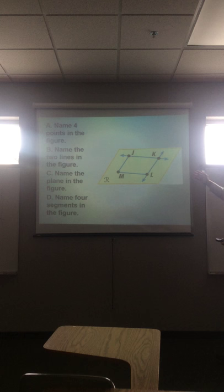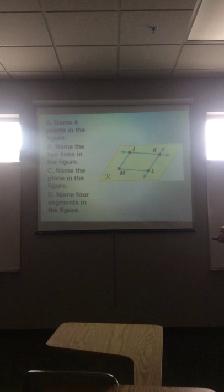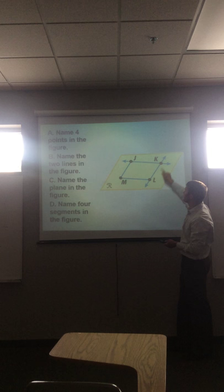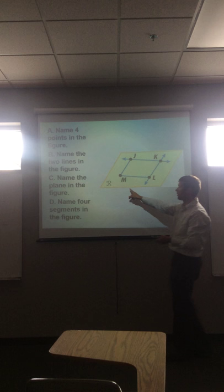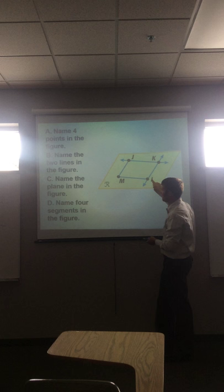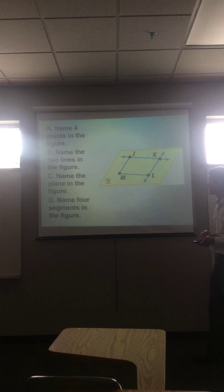So name the four points in the figure. So we can J, K, L, and M. Name two lines in the figure. So we can have a line JK, and we can label this KL. Those would be two lines. Name the plane. You could say plane R. You could say plane JKL. You could say plane LMJ. You need three of those points.